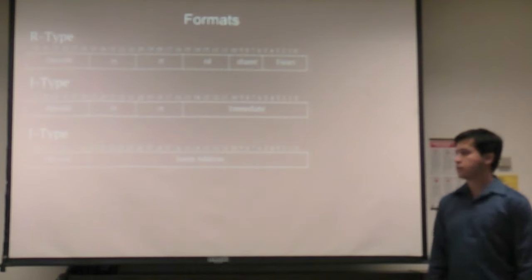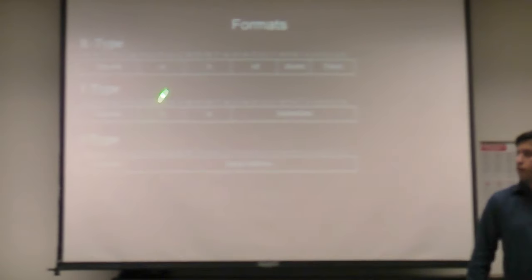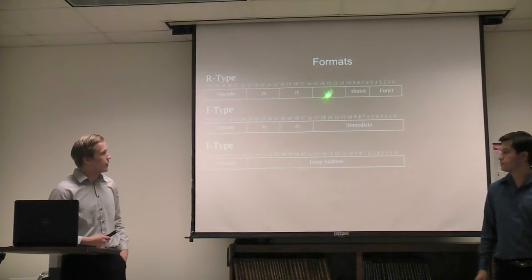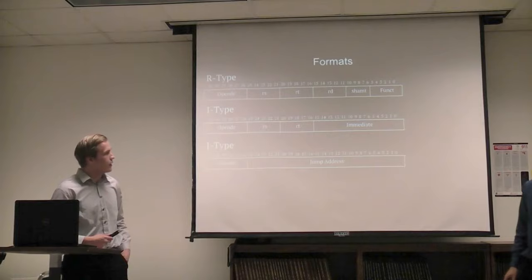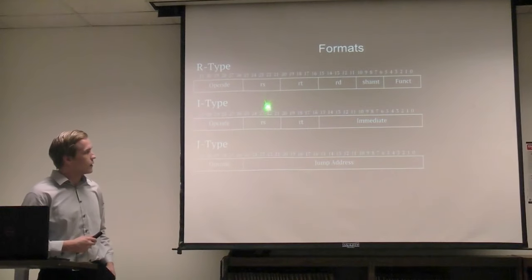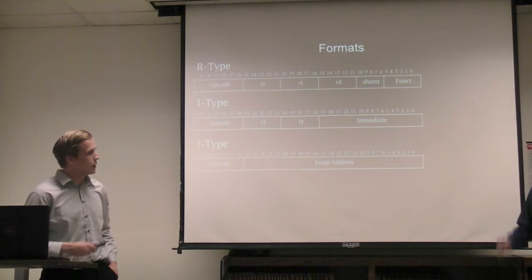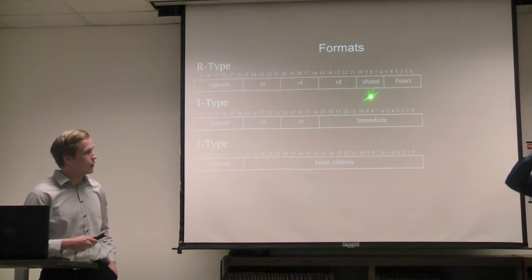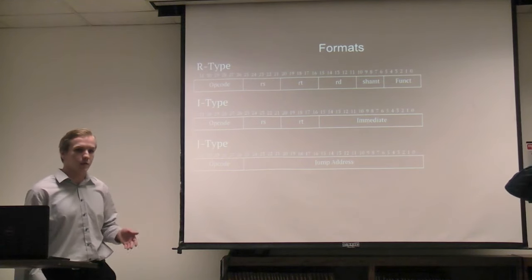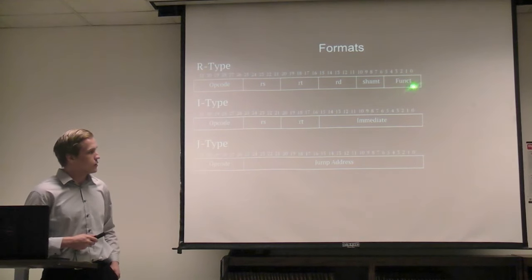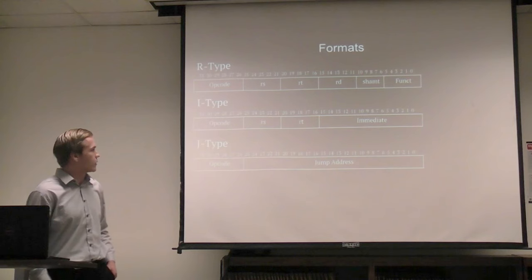We have our formats. We have the R-type, with RS, RT, and RD fields. RS and RT specify the source operands; RD specifies the destination register. We have a shift amount field for shift logical and shift arithmetic instructions. And then we have our function field that chooses the function for the R-type instruction.